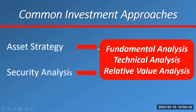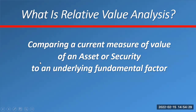Even a famous professor who taught nothing but fundamental analysis found that the overwhelming majority of his alums were doing relative value analysis, not fundamental analysis. So he started teaching relative analysis. What is relative analysis? You're taking some measure of value, like the price of something, and comparing it to some fundamental factor like earnings. That's why we say price to earnings. So a stock priced at $150 with earnings of $15 — you're paying $10 for $1 of earnings.